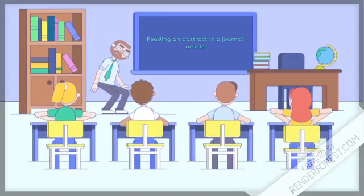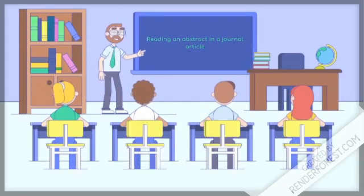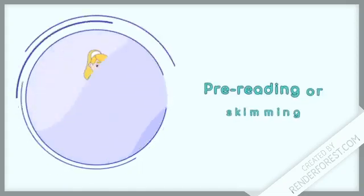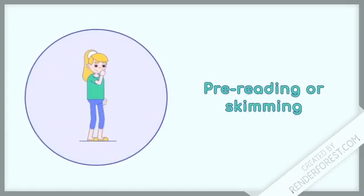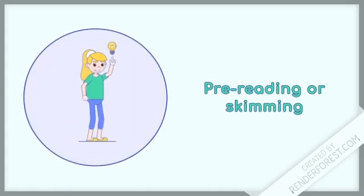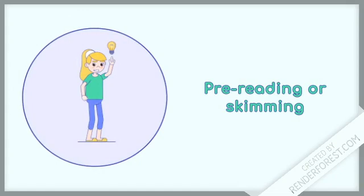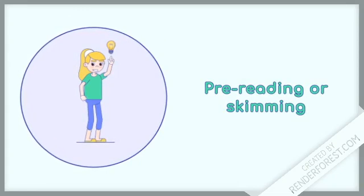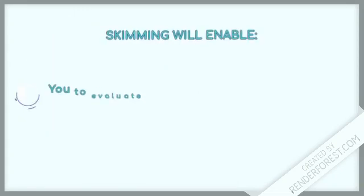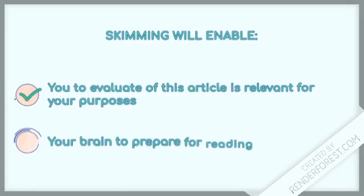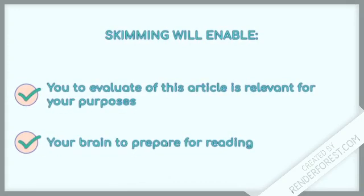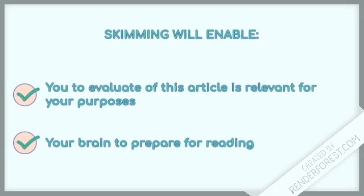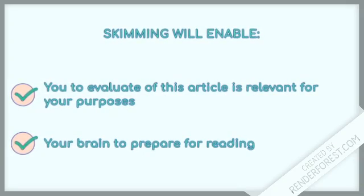Today we're going to look at the importance of reading an abstract of a journal article and how to read the abstract. Have you watched the video on effective reading strategies? There I explain how and why it is important to skim an article before you start reading it. Part of pre-reading a journal article is reading the abstract. This will let you know if the article is indeed on the topic you want to read about, and it will prepare your brain for reading the article.